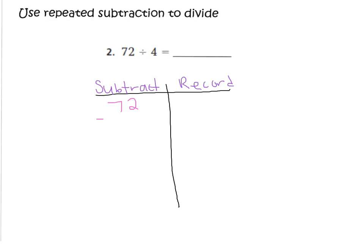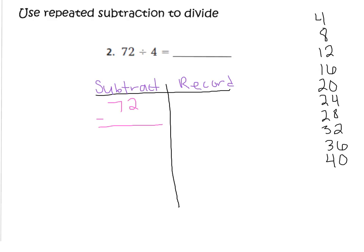I'm going to subtract multiples of 4 from 72 until I get to 0 or very close to it. I wrote down my multiples of 4 down the side. I'm looking for the biggest multiple of 4 that I can subtract from 72, and that is 40. Before I do my subtraction, I need to record how many groups of 4 is 40. It's 10 groups of 4, because 4 times 10 is 40. So I put 10 groups on my record side. Now I'm ready to subtract: 72 minus 40.